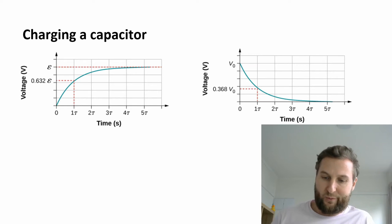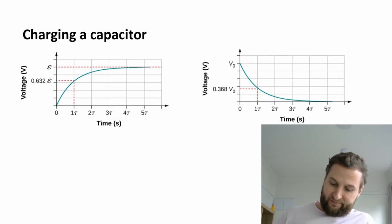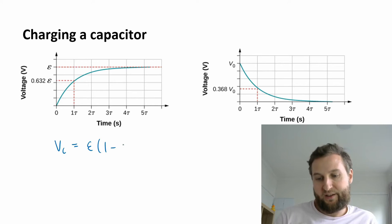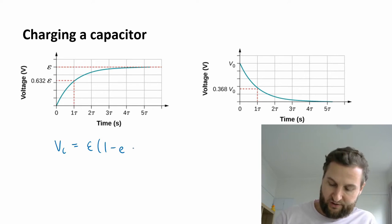This time delay can be modeled with an exponential equation, so these curves may look a little bit familiar as an exponential graph. Here on the left for charging we can say that the voltage for charging is equivalent to this value epsilon. And then we have 1 subtract the exponential, and it's going to be minus t over tau.